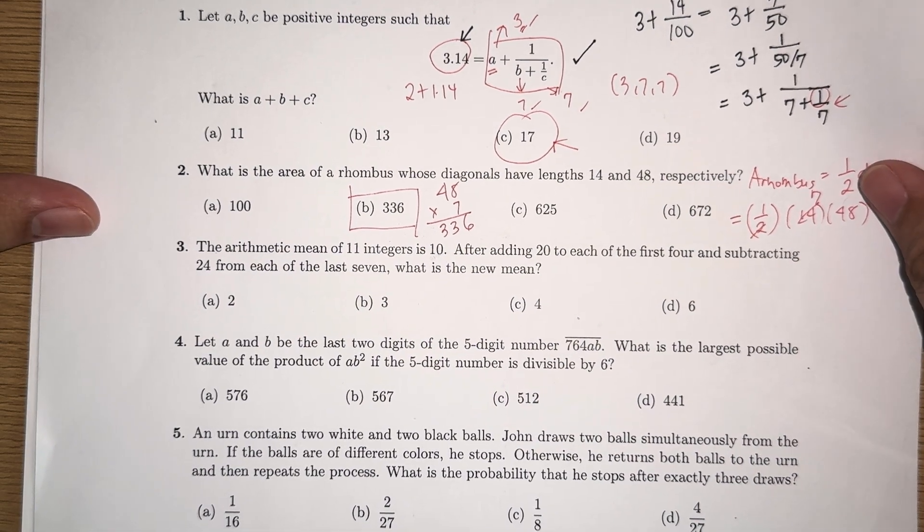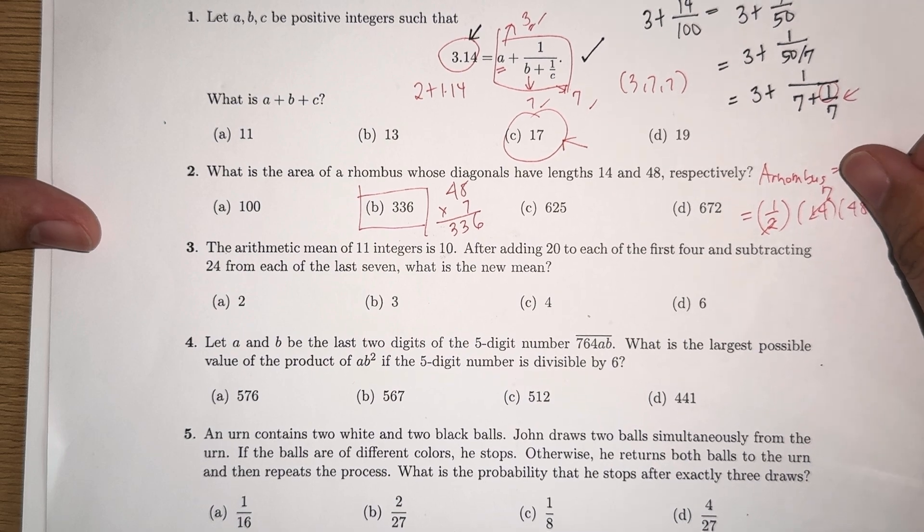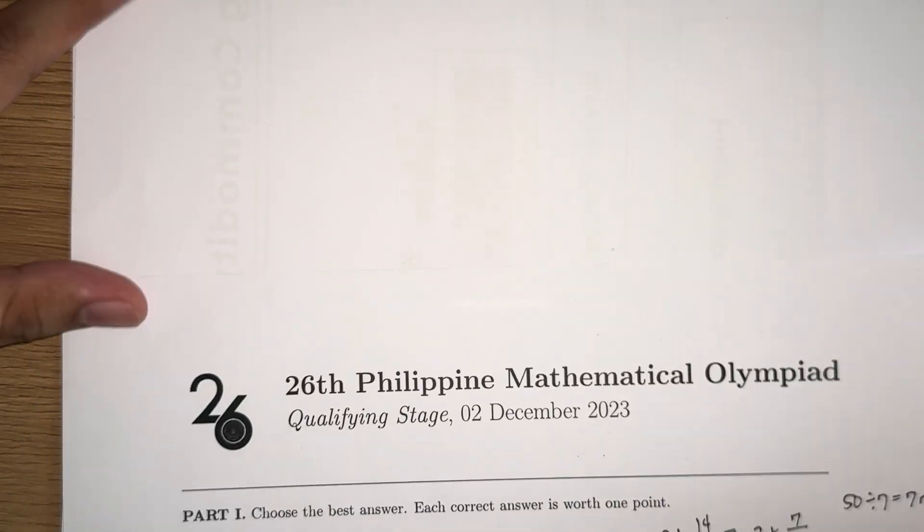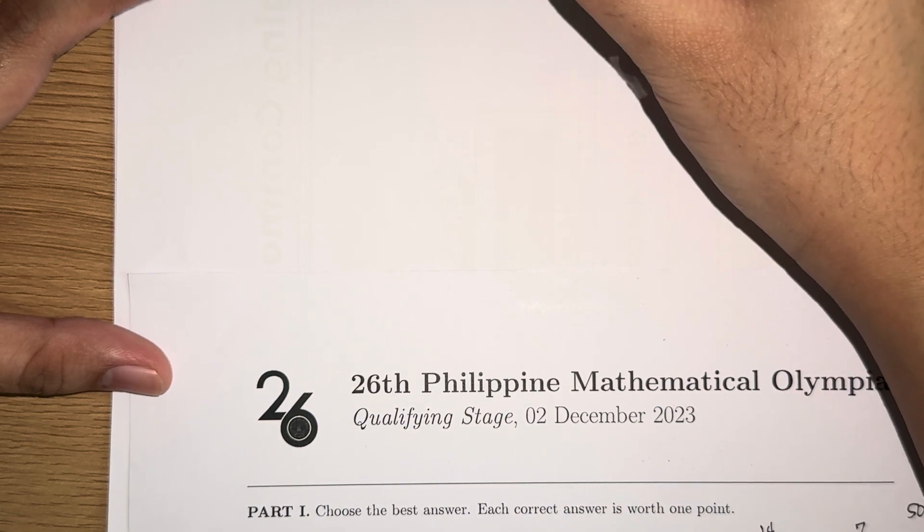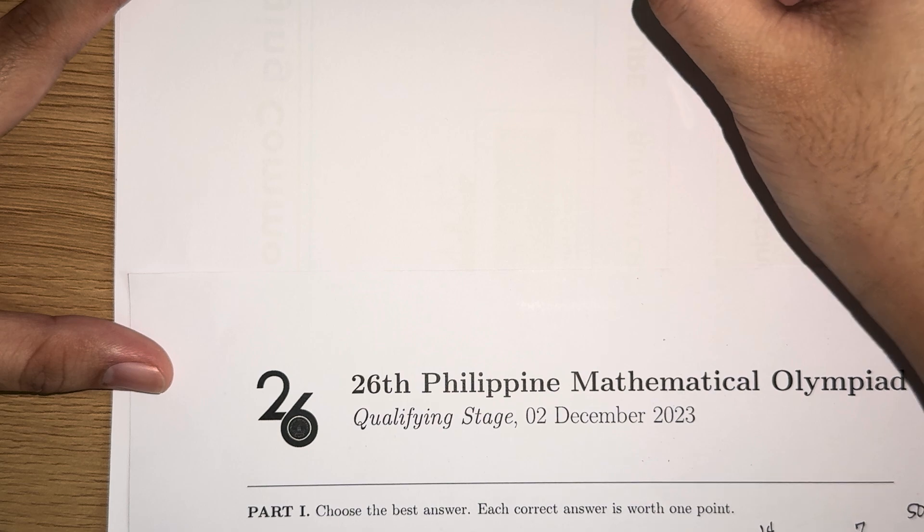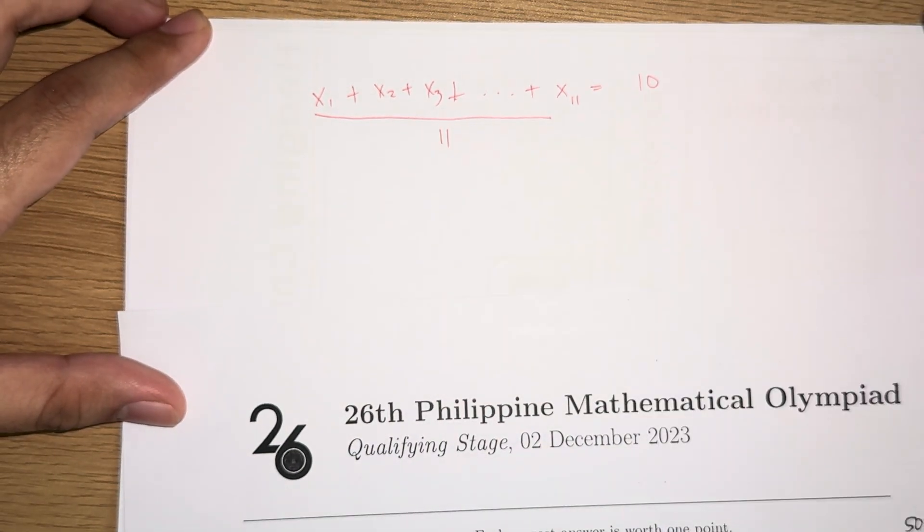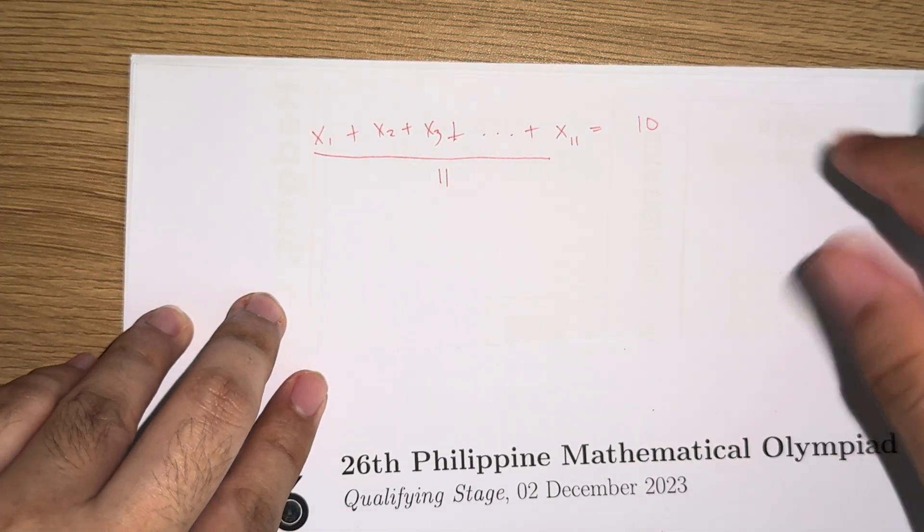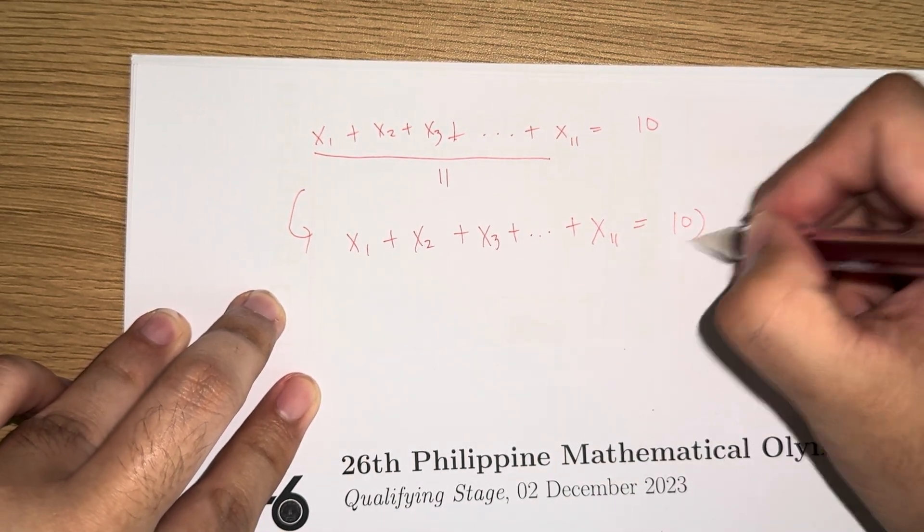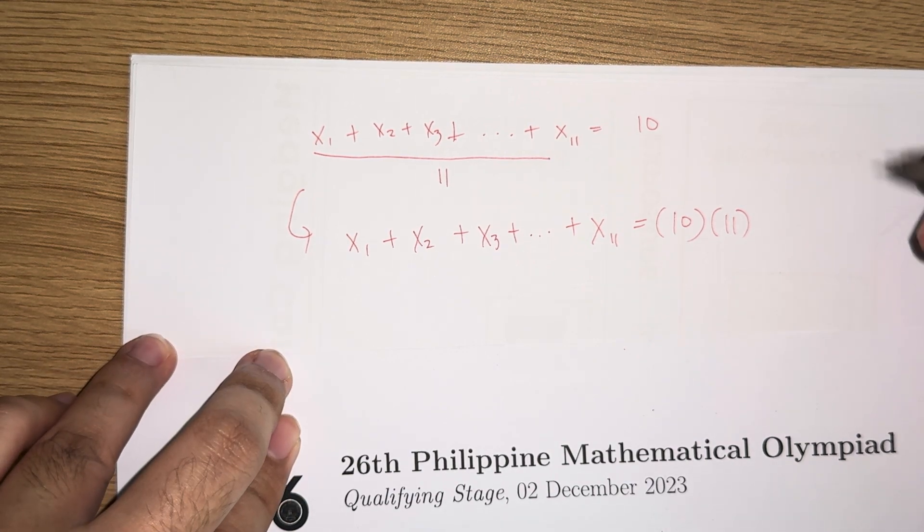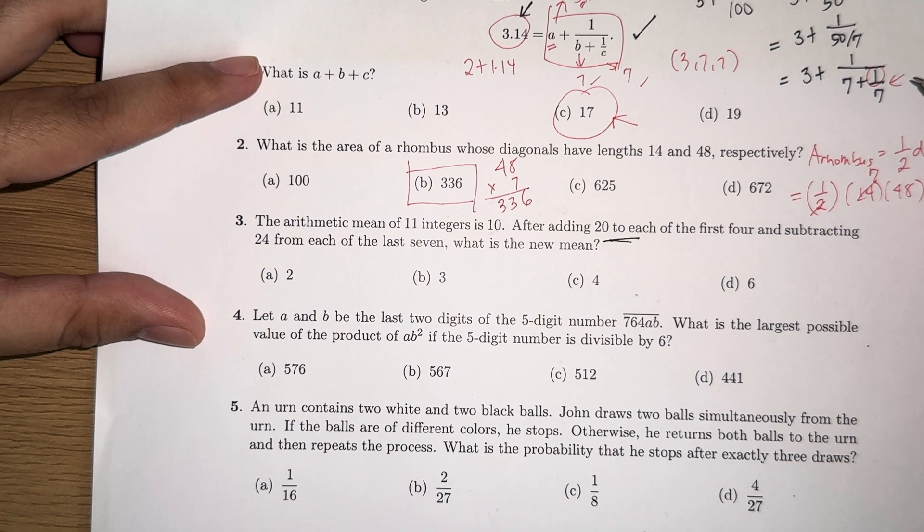Next, the arithmetic mean of 11 integers is 10. After adding 20 to each of the first 4 and subtracting 24 from the last 7, what is the new mean? So to answer this one, let's say that the numbers are x1, x2, x3, and so on until x sub 11. We know that the mean is 10, and we can get that by getting the sum divided by the number, which is 11. So this means that x1 plus x2 plus x3 and so on until x11 must be equal to 10 times 11.